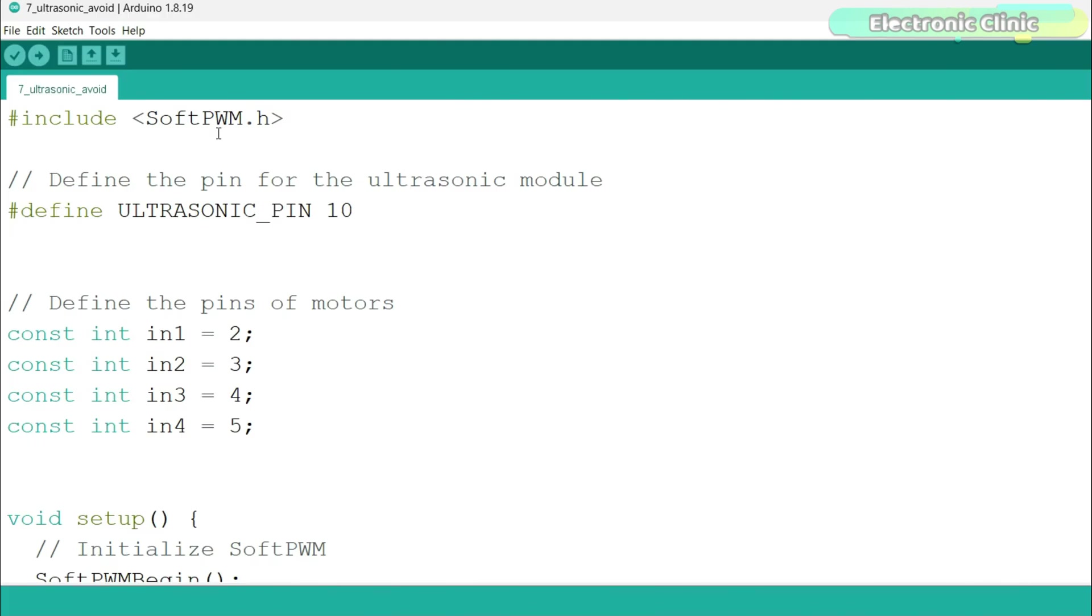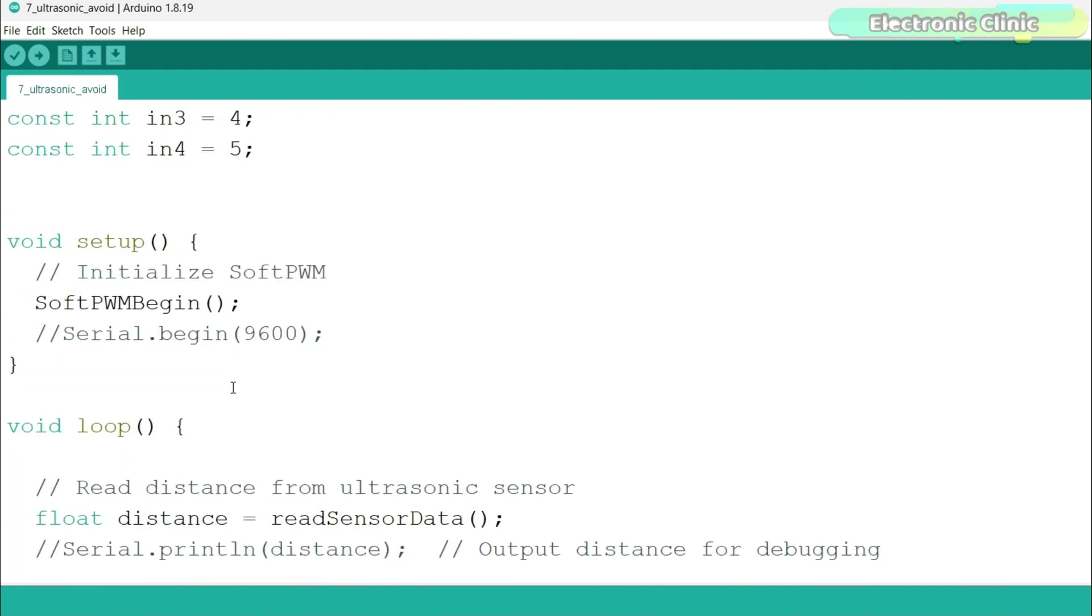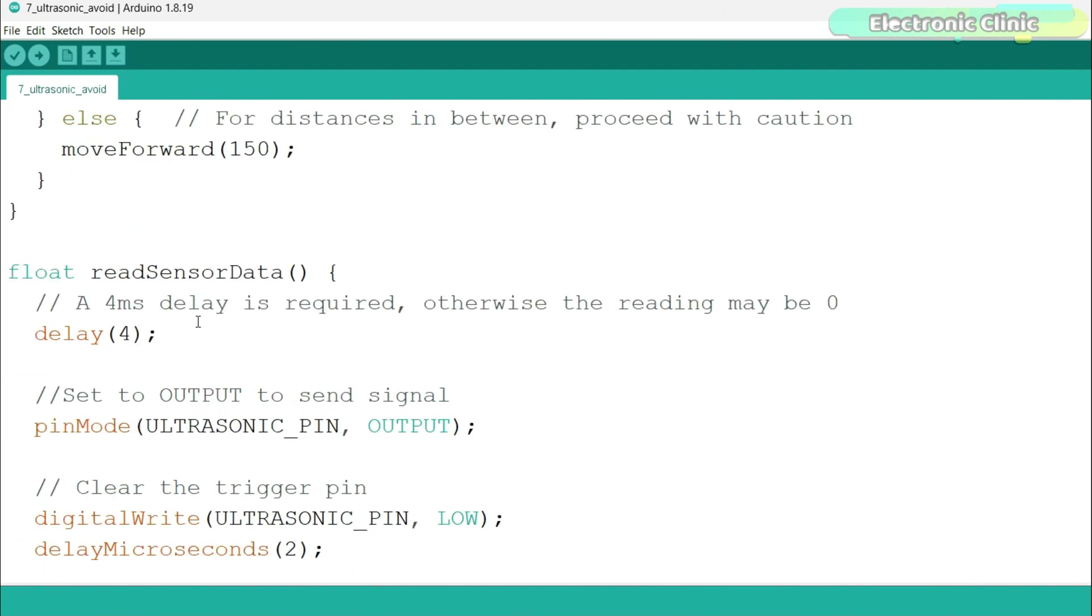Again, we are using the same library for the motors, the same pin definitions for the ultrasonic sensor and motor pins. Inside the setup function, we simply activated the SoftPWM library. Rest of the program is pretty straightforward.